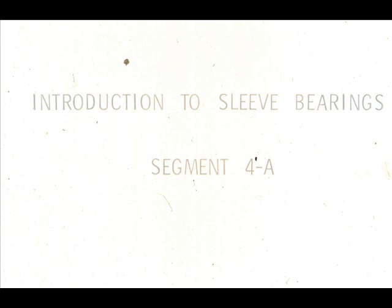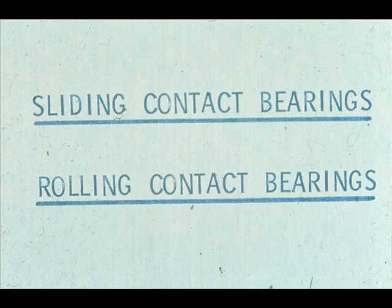We will discuss the types of bearings now in use at plants around the country. To begin with, we will show you the basic types of sleeve bearings and point out the differences between them and other types of bearings. There are two basic categories of bearings which are widely used in industry today: sliding contact bearings and rolling contact bearings.